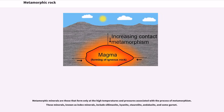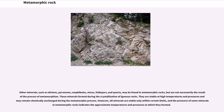Metamorphic minerals are those that form only at the high temperatures and pressures associated with the process of metamorphism. These minerals, known as index minerals, include sillimanite, kyanite, staurolite, and andalusite, and some garnet.